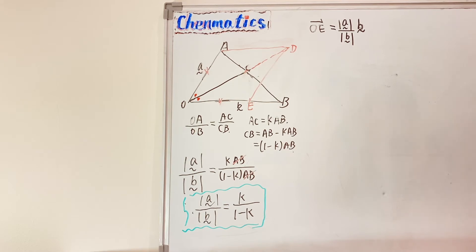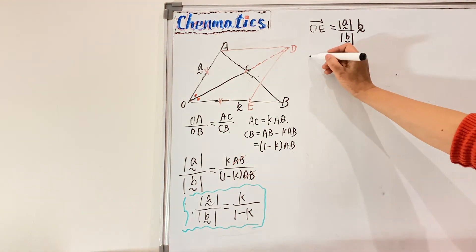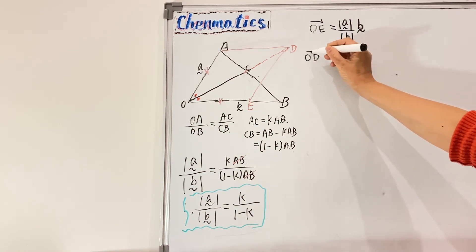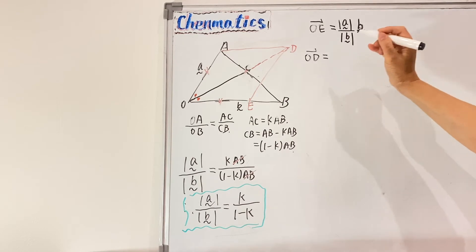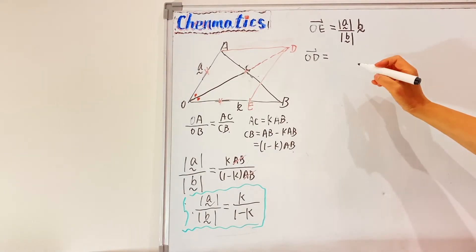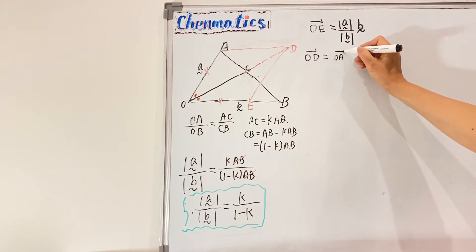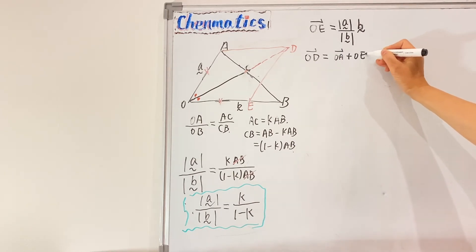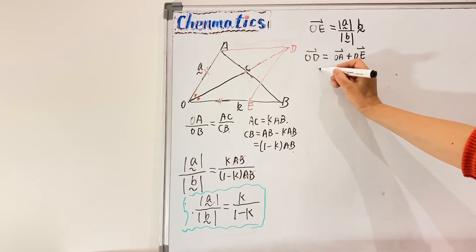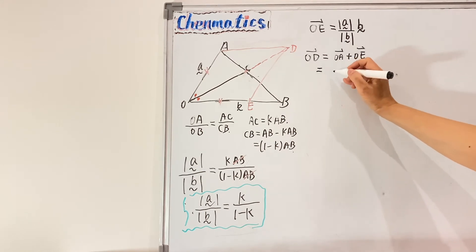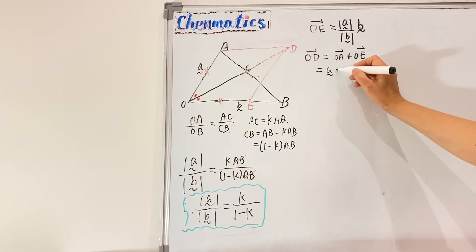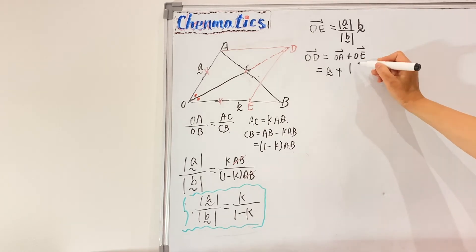From there we can find the vector OD. OD will be the sum of vector OA plus vector OE, which equals A plus (|A|/|B|)·B.